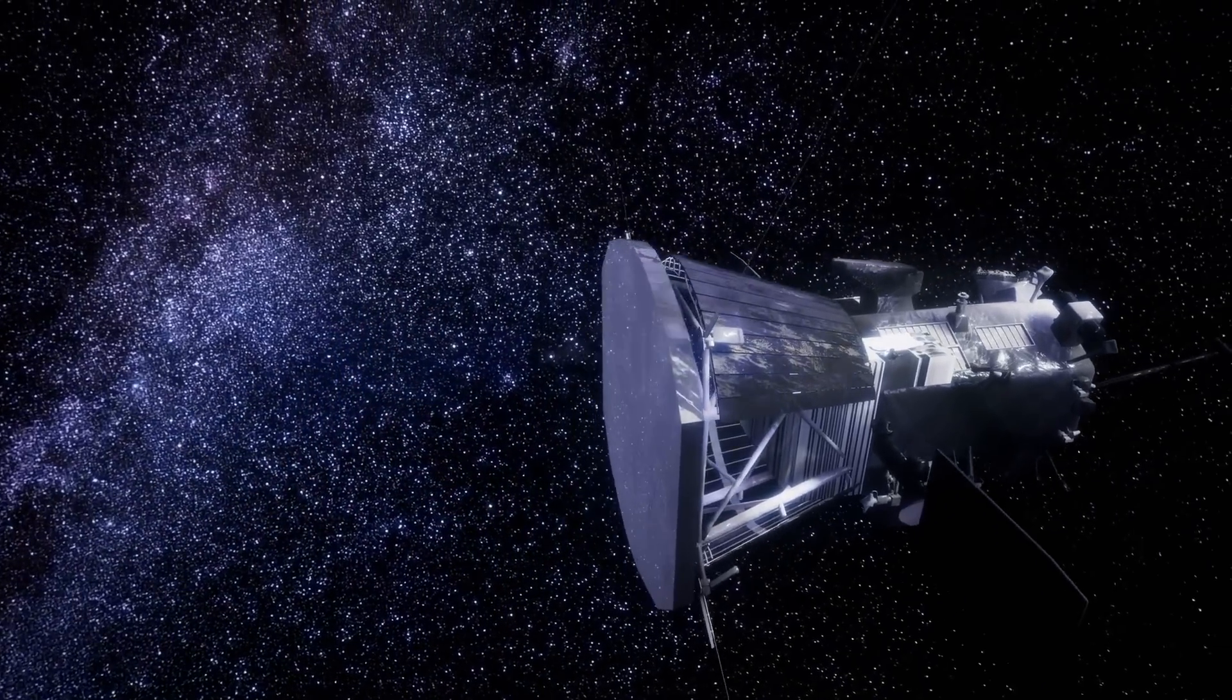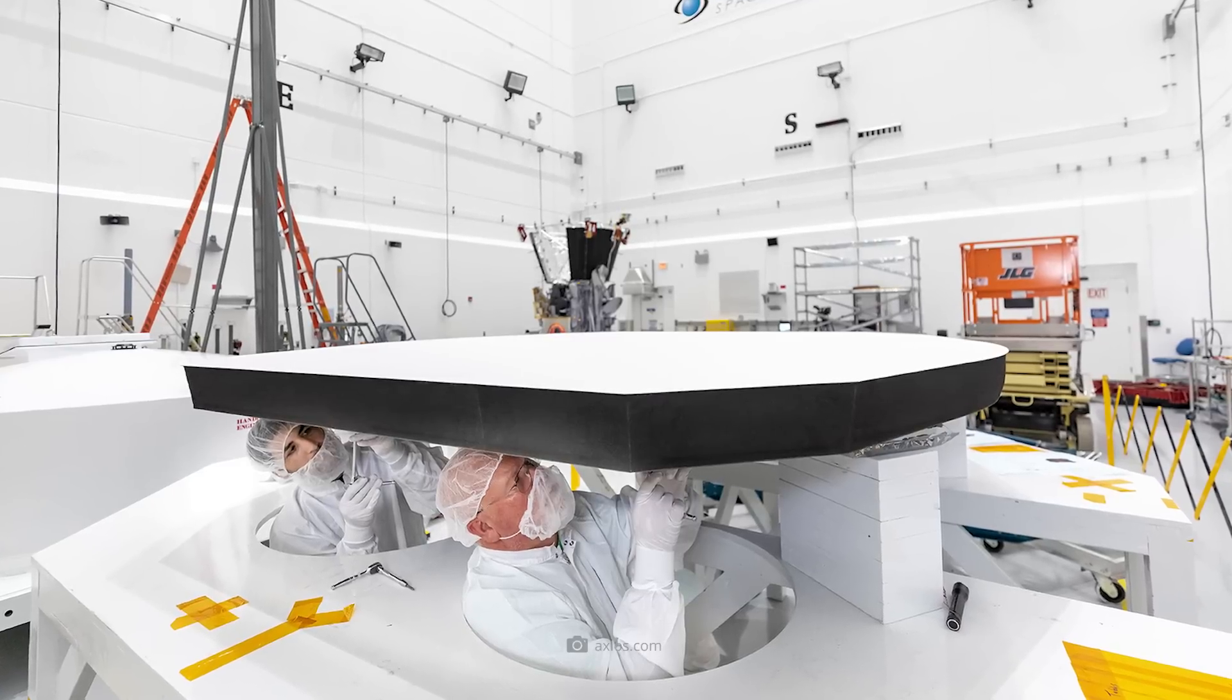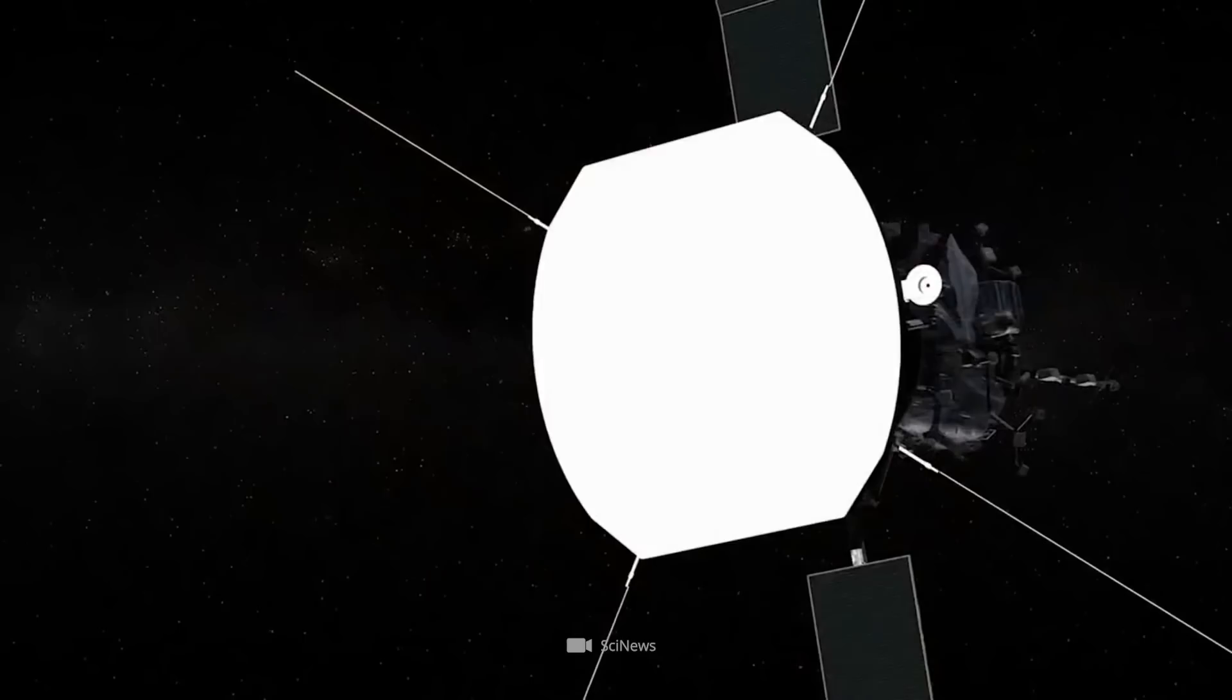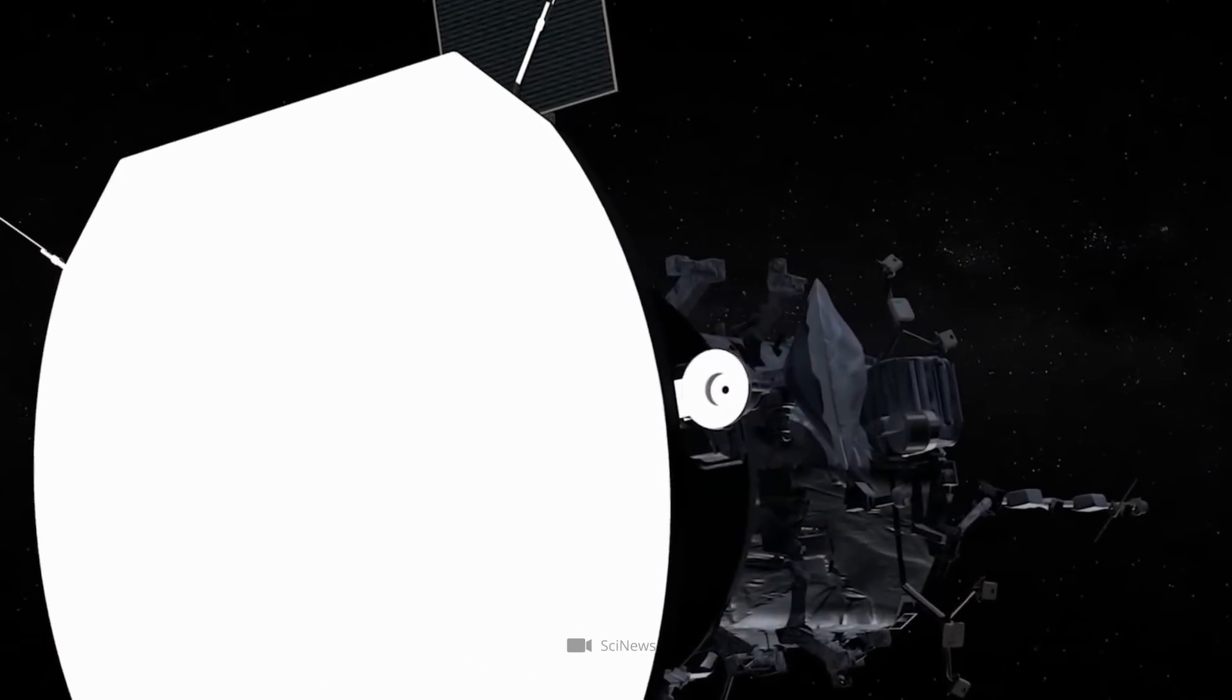Furthermore, the outermost layer of the shield was given a white ceramic coating, a material that reflects solar heat particularly well. As a result, the thermometer behind the heat shield only climbs to 30 degrees.